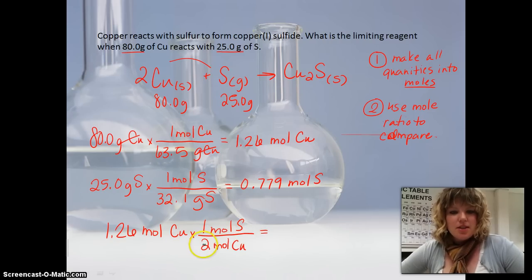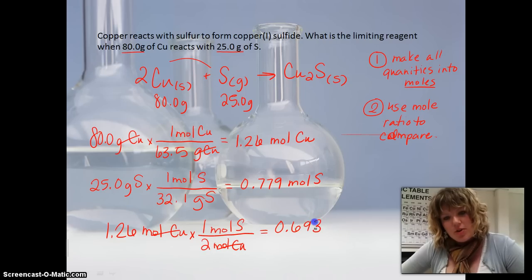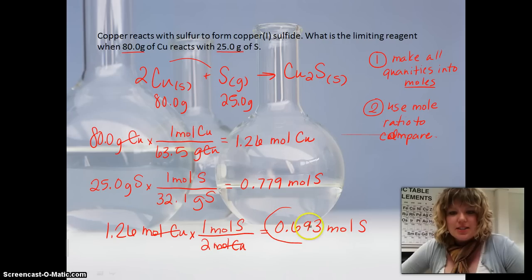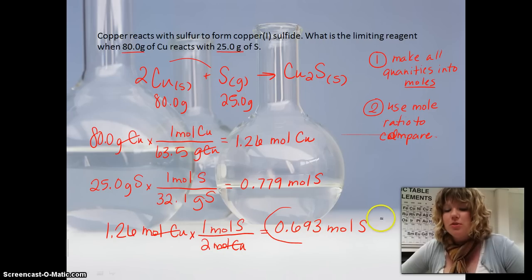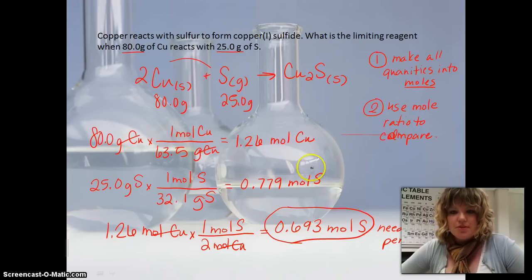So now we divide this here, and this is going to give us moles of sulfur. And so we get 0.693 moles of sulfur. Now, we use this number right here. This is telling us the number. If you have 1.26 moles of copper, you need 0.693 moles of sulfur for it to be perfect. So this is the amount needed for perfect reaction. This is always your perfect scenario when you use that mole ratio.